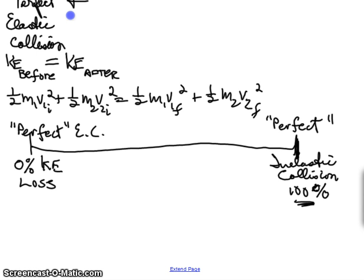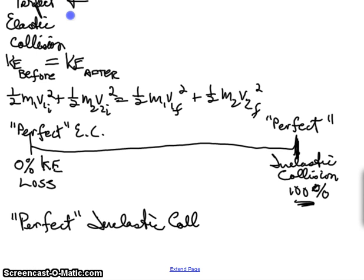So those are the two extremes. A perfect inelastic collision is basically when there's a large energy loss. It's not necessarily 100%. Perfect inelastic collision would be something that occurs when the two objects stick together.